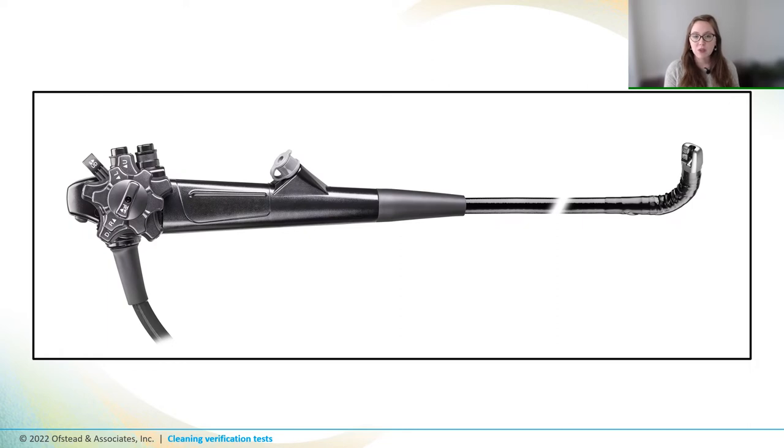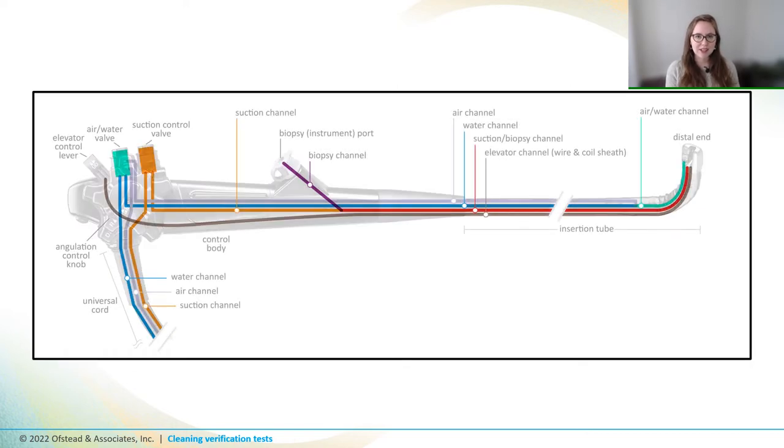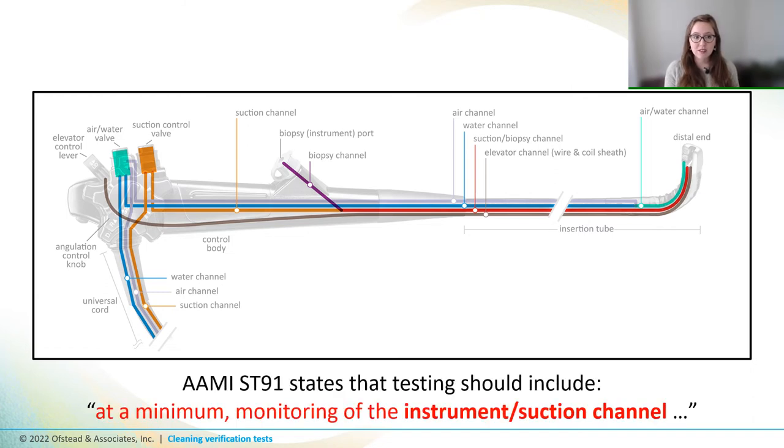So now we know of a few different kinds of tests we can do, but what are we testing? Endoscopes kind of look like big garden hoses on the outside, but they're pretty complicated on the inside. And the new AME ST-91 standard says that testing should include, at a minimum, monitoring of that big instrument suction channel, which means you've got to figure out how to take samples from inside your scopes.